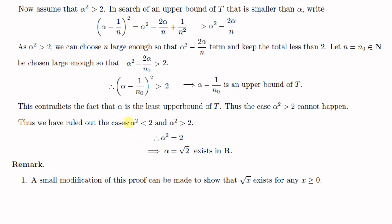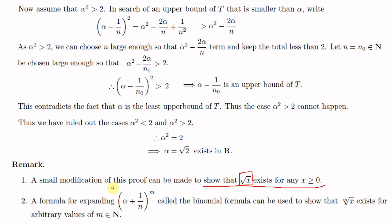We have a remark: the same proof can be used to show that root x exists for any x greater than or equal to 0, by modifying wherever 2 appears and replacing it with x. Furthermore, using the binomial formula for (alpha + 1/n) raised to the power m, we can expand it to show that the mth root of x exists for any arbitrary value of m.